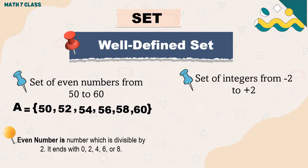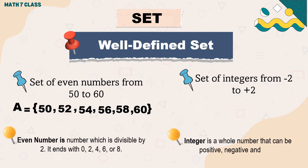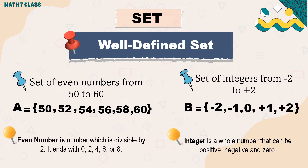Another example: a set of integers from negative 2 to positive 2. An integer is a whole number that can be positive, negative, or zero. So the set of integers from negative 2 to positive 2 are: −2, −1, 0, +1, and +2.